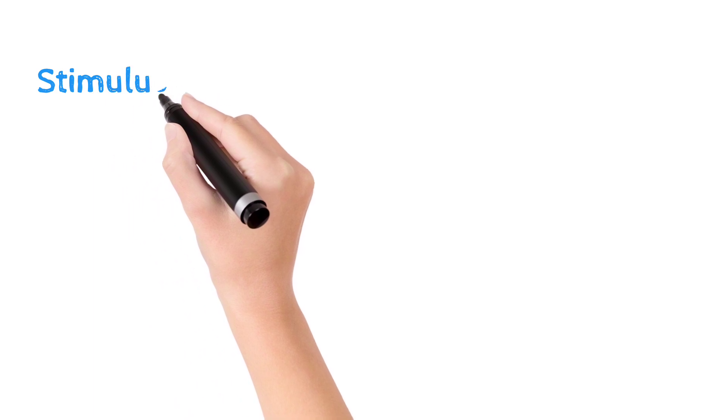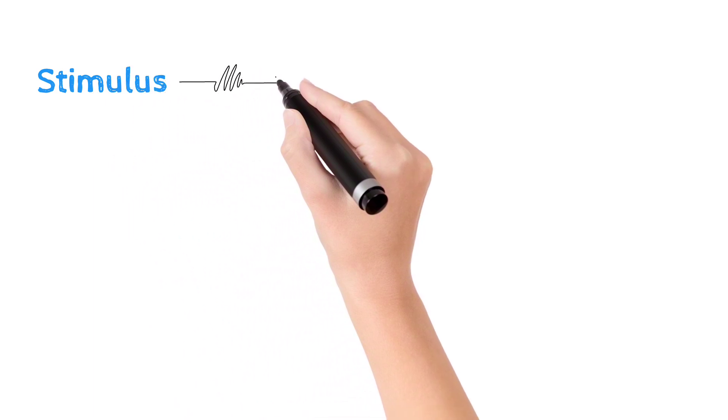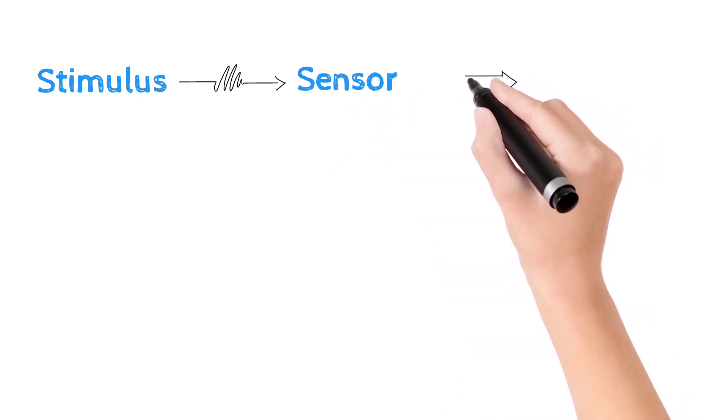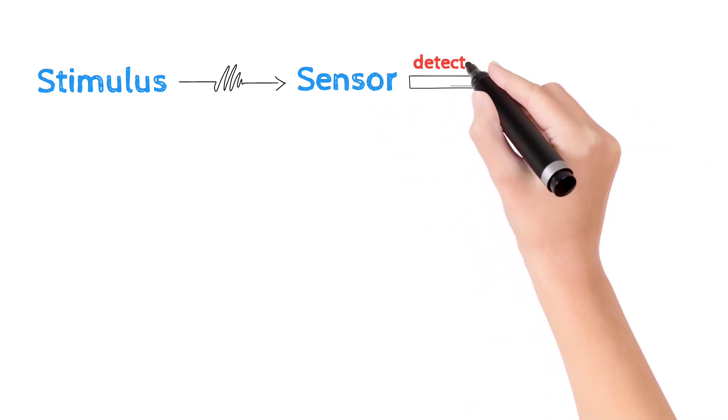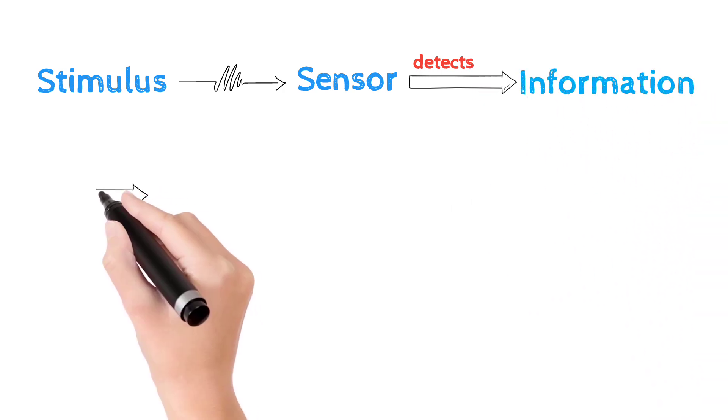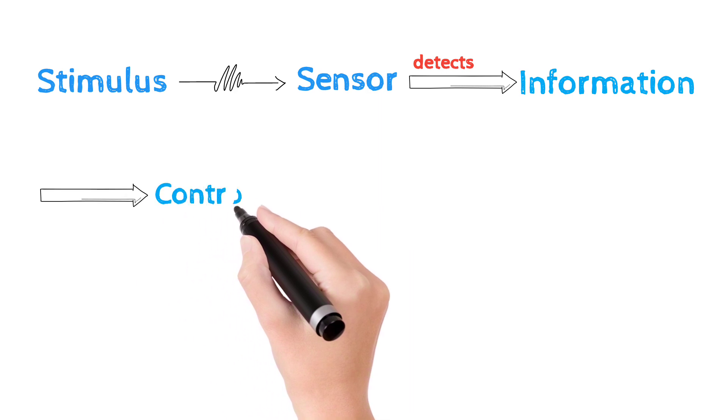Let us say a stimulus is made in the body. What detects the stimulus? That is the sensor. We have a detection tool that can detect changes. If you can detect that information, the information will be sent to the control center.